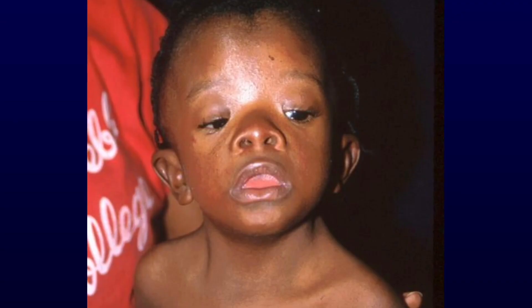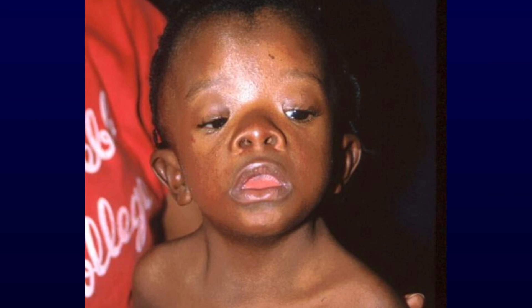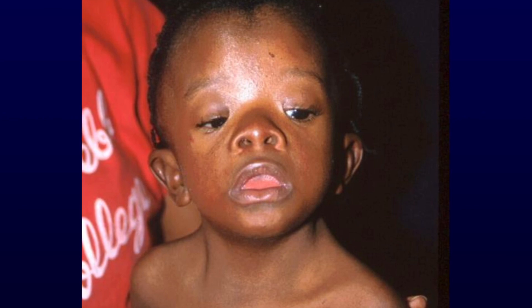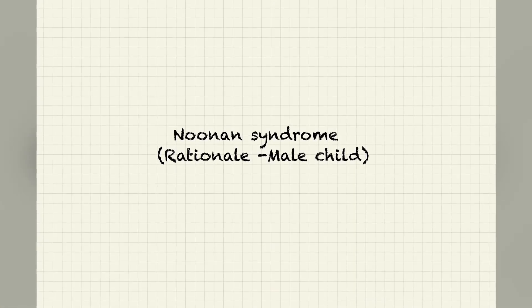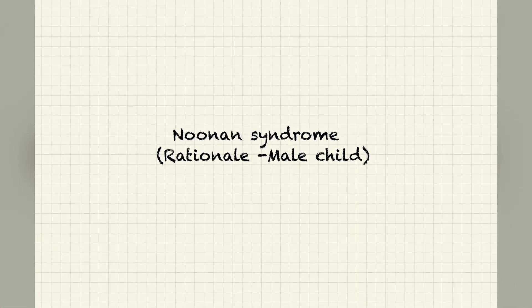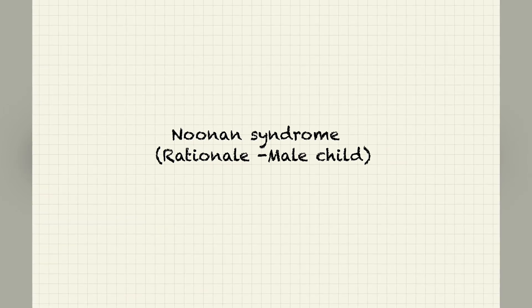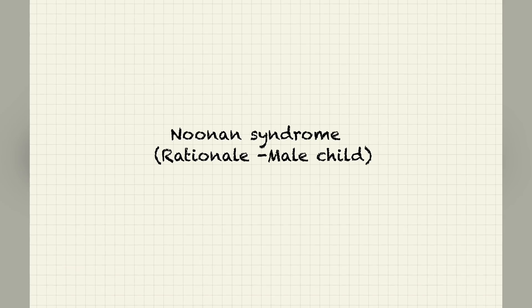Now let's check what you've learned. Here is a three-year-old male patient with subnormal intelligence, webbed neck, low-set ears, and widely spaced nipples. The answer is Noonan syndrome, because the patient is a male child and has subnormal intelligence. Thank you, happy learning!